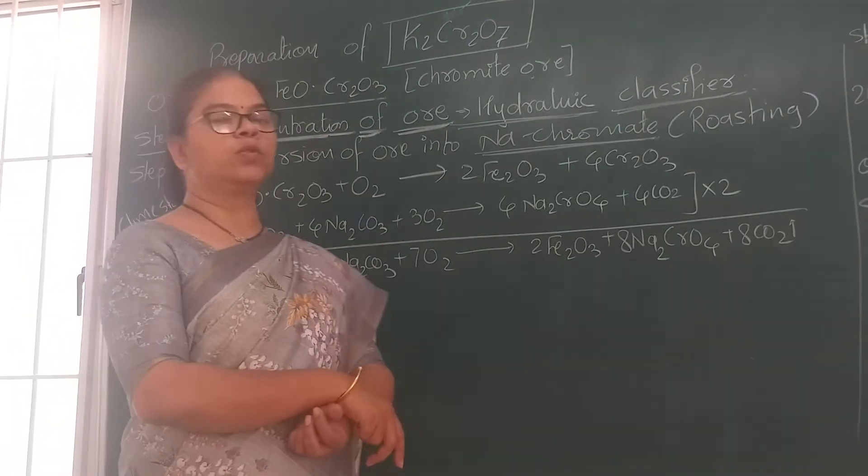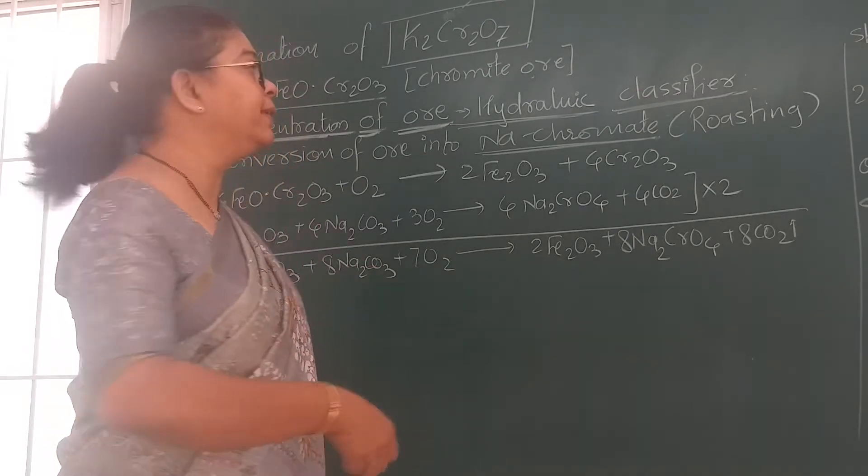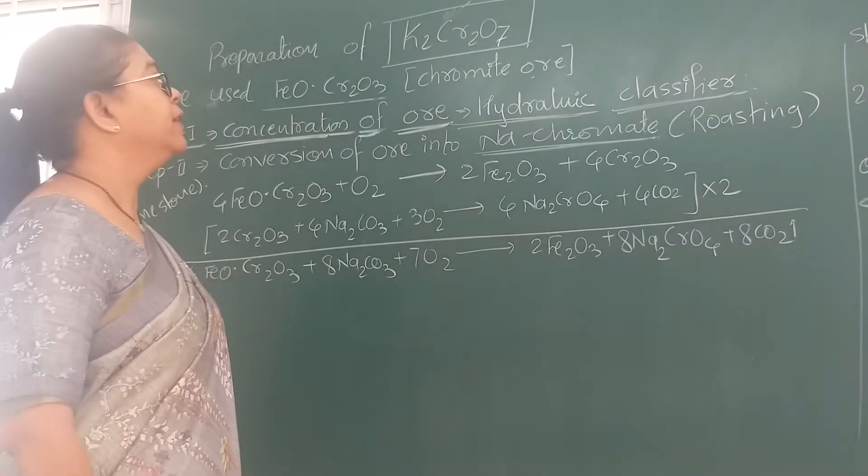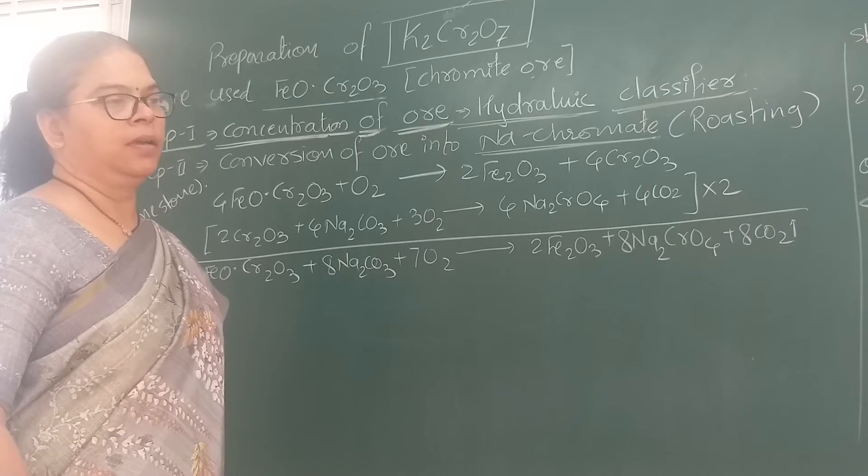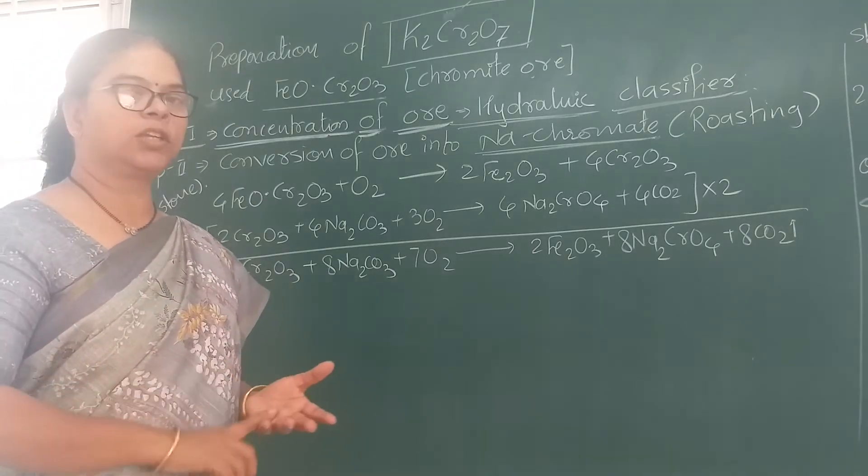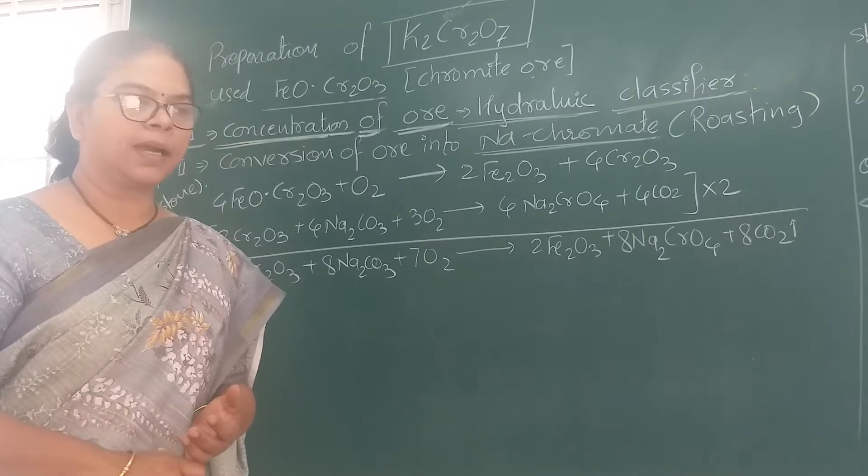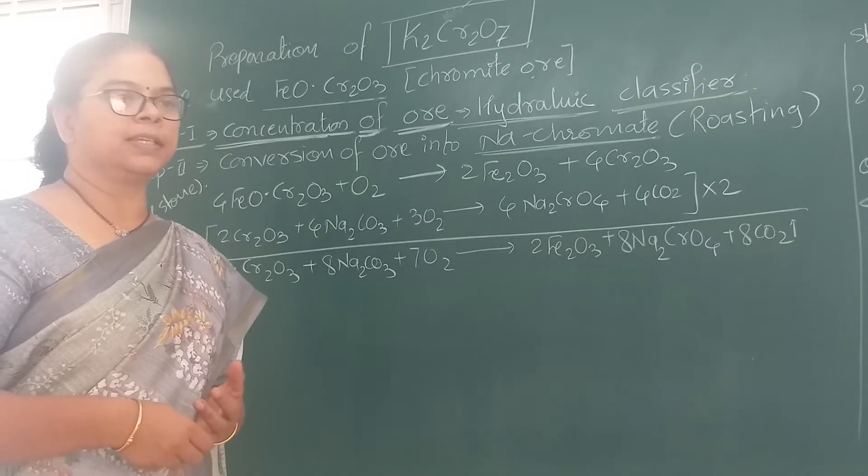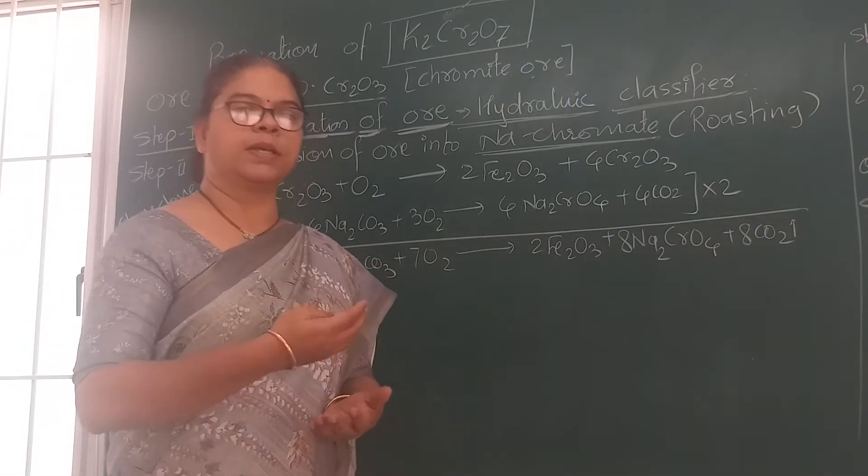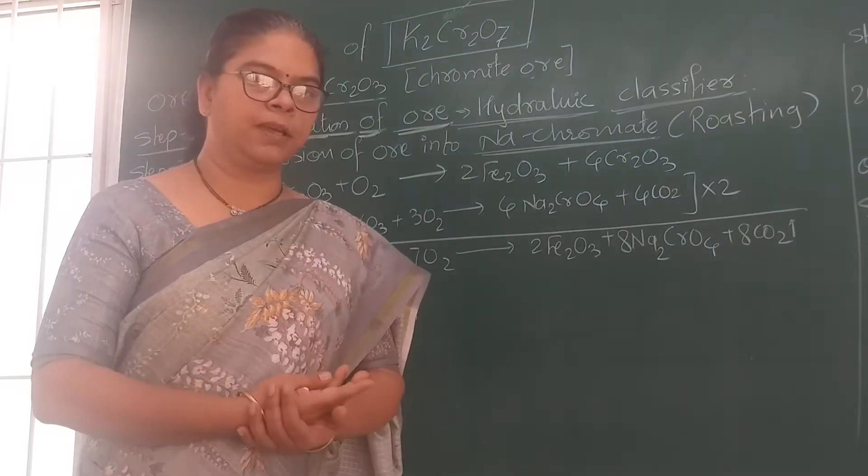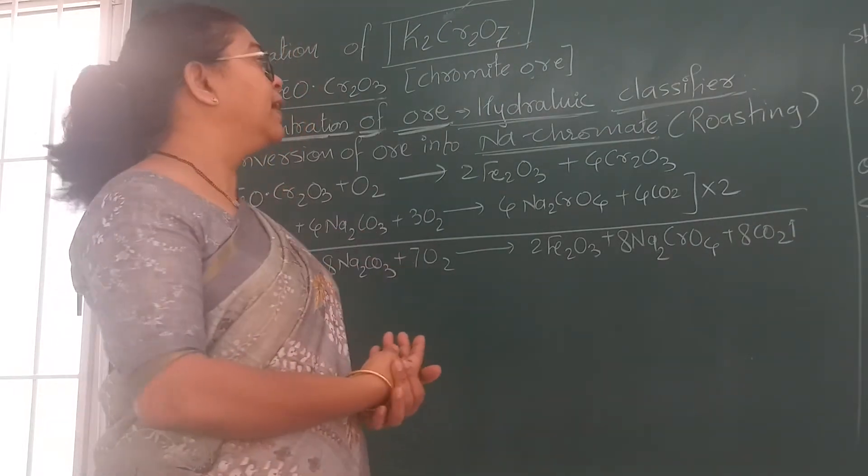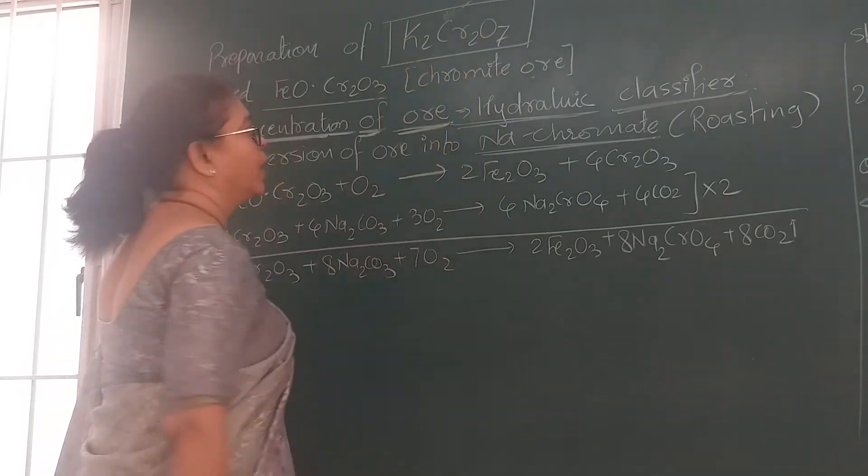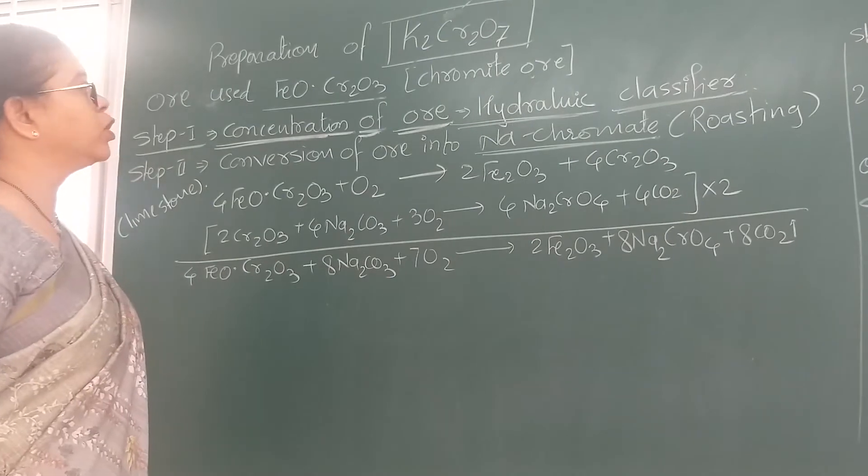This K₂Cr₂O₇ compound contains one of the D-block elements, that is chromium. We have to study first the position of that element in periodic table, second its electronic configuration, its periodic properties including ionization energy, atomic size, screening effect and all that, and then we have to study that element in one compound. Now we will start with preparation of potassium dichromate.